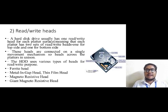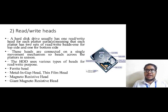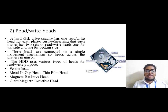Now let's discuss the read/write head. A hard disk drive usually has one read/write head for each platter surface, meaning each platter has two sets of read/write heads — one for the top side and one for the bottom side. These heads are connected with a single movement mechanism so the heads move across the platters in unison. The hard disk drive uses various types of heads: ferrite head, metal-in-gap head, thin film head, magnetoresistive head, and giant magnetoresistive head.